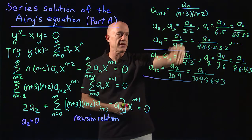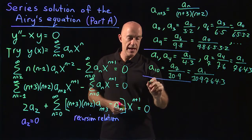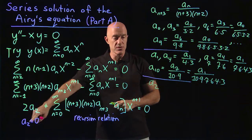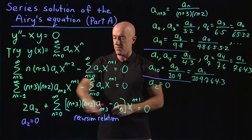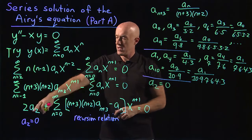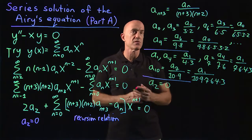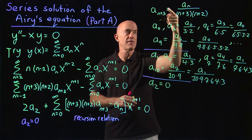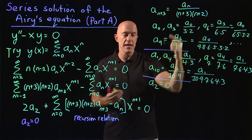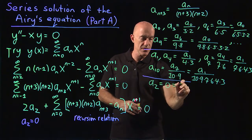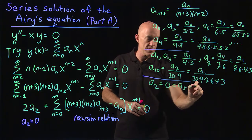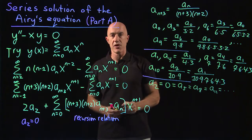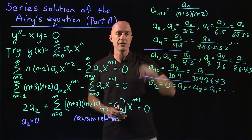There is still the sequence involving a sub two. But from the constant term condition, a sub two equals zero. Plugging n equals two into the recursion relation gives a sub five equals a sub two divided by something, but since a sub two is zero, a sub five is also zero. Consequently, a sub eight, a sub eleven, and all subsequent terms in this sequence are zero. So the entire third sequence vanishes because a sub two equals zero.